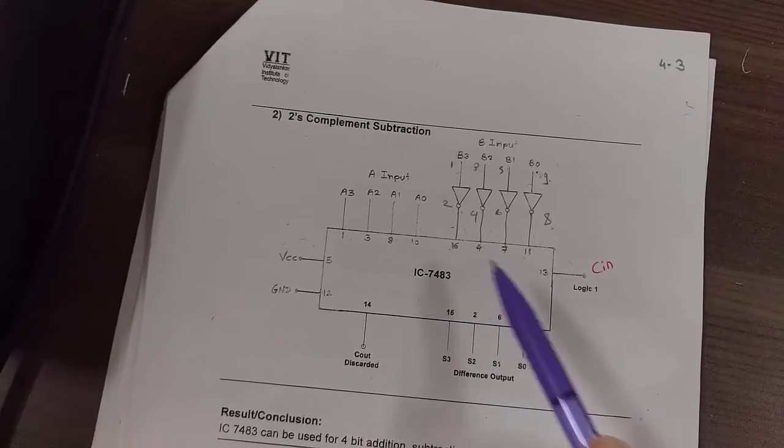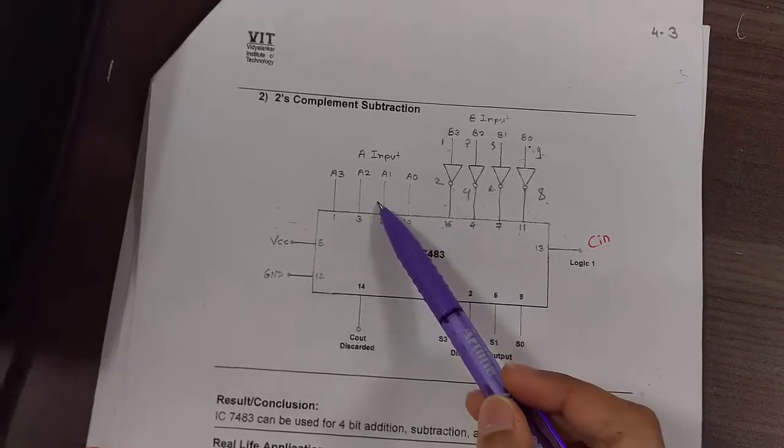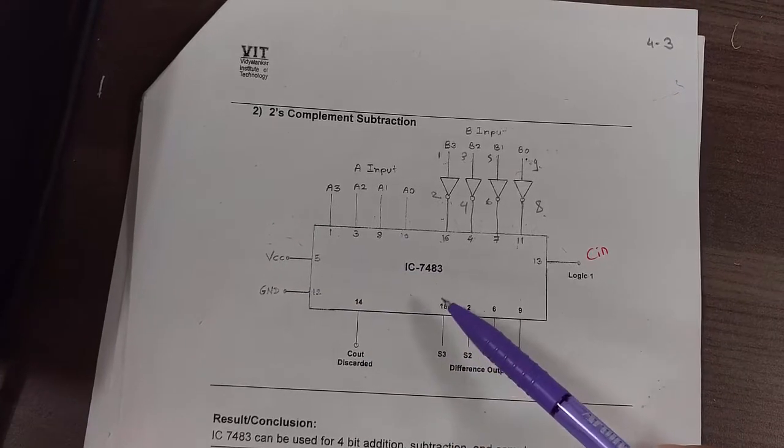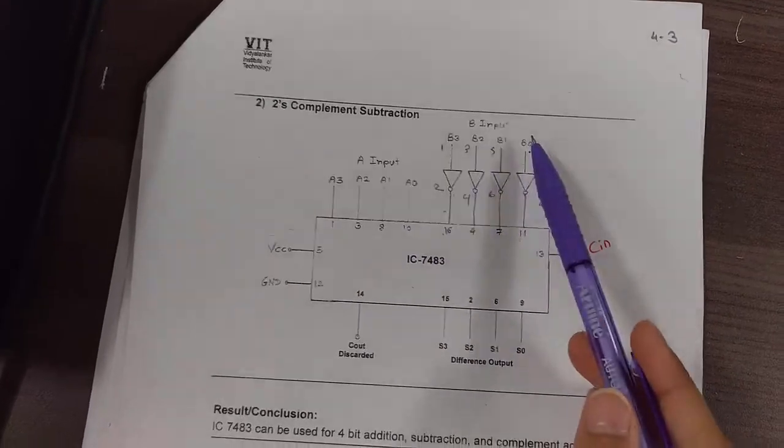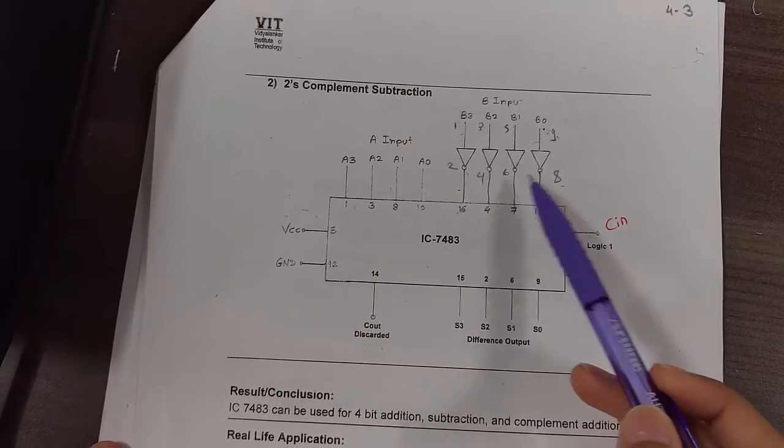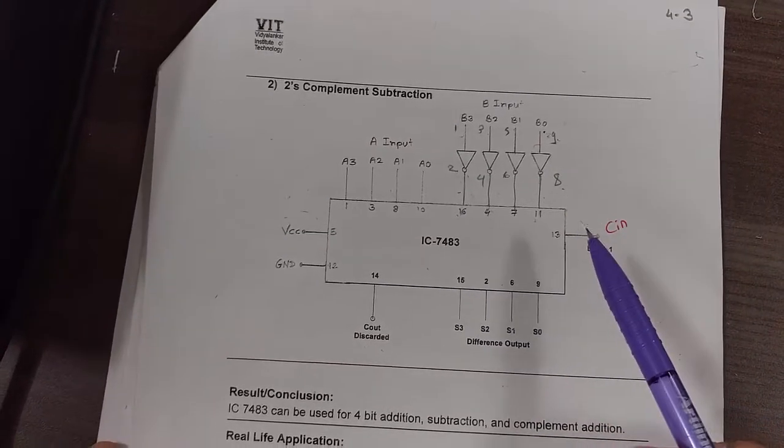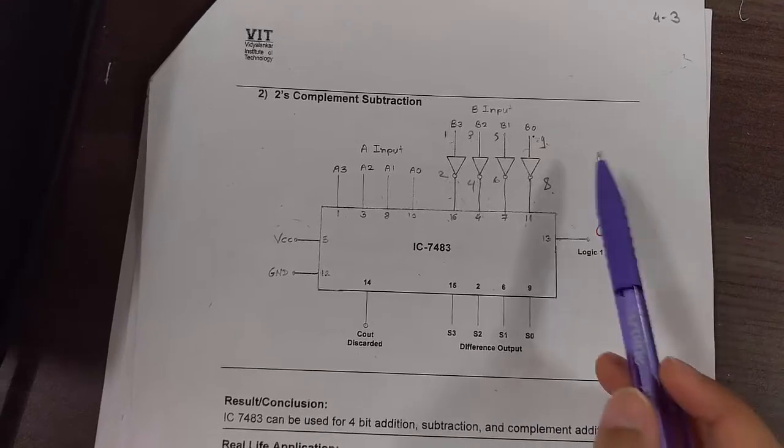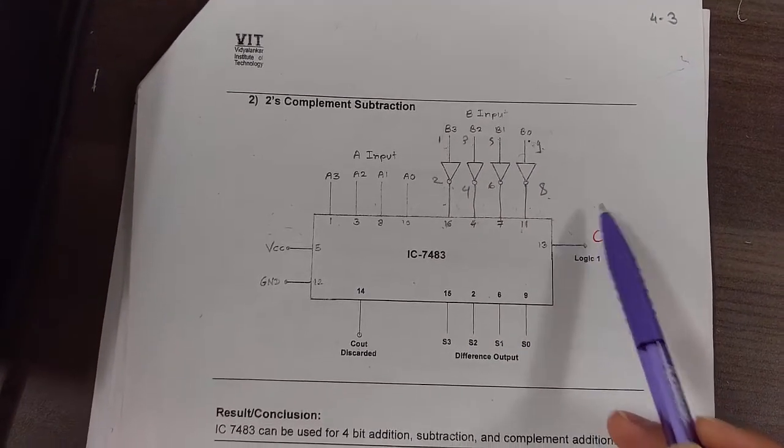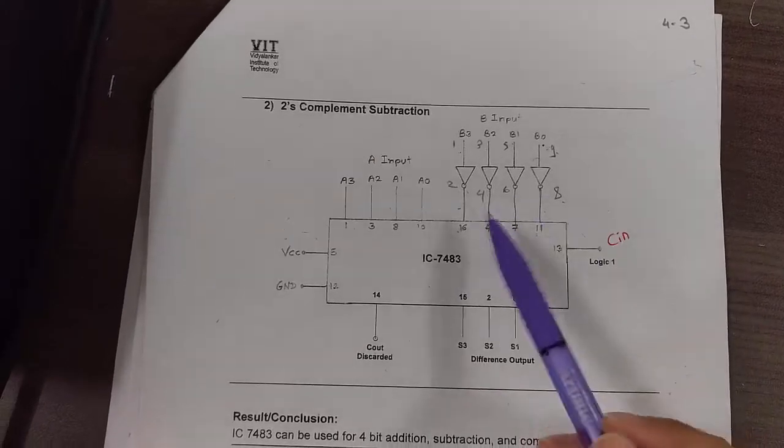This is the circuit for 2's complement subtraction. The A input is similar and the difference output is also similar to the adder connection. Only the change is in B input. Since we are doing 2's complement subtraction, we need to use NOT gate for that. And 2's complement is basically the number which we have, we take 1's complement of that and we add 1.